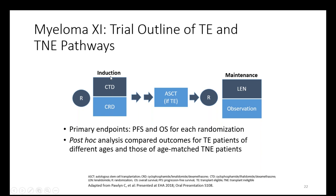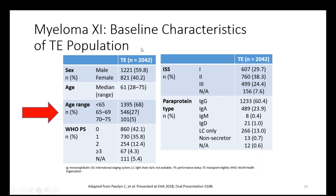The Myeloma 11 trial, initiated in the United Kingdom, looked at a variety of populations to see whether groups of patients based on age, up to age 75, did well with transplant. Patients received different types of induction treatment prior to transplant, and if eligible, went on to transplant followed by either maintenance or observation. In this presentation, they focused on the transplant-eligible population and outcomes based on age. Most of those who were transplant-eligible were under 65, but there were considerable numbers between ages 65-69 and 70-75.